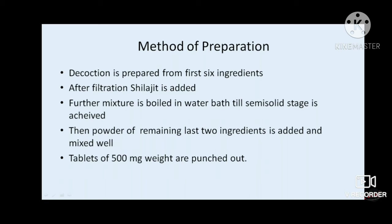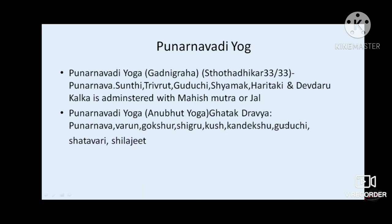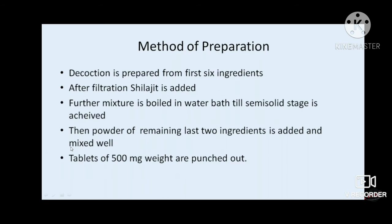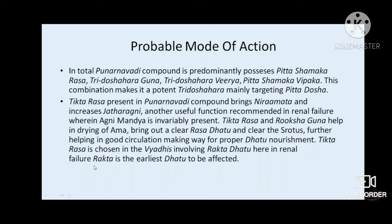Preparation method: a decoction (quatha) is prepared from the first six ingredients — punarnava, varuna, gokshura, shigru, kusha, and kandekshu — then filtered, shilajit is added, and the mixture is processed in a water bath until semi-solid stage. The remaining two ingredients, guduchi and shatavari, are then added, mixed well, and tablets are prepared for management of the disease.